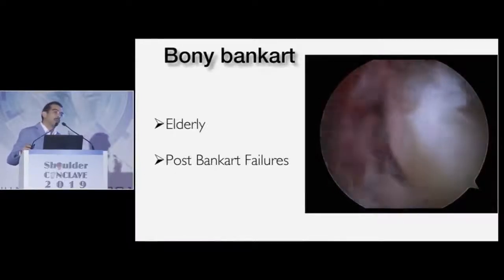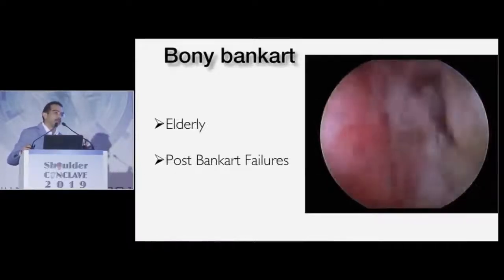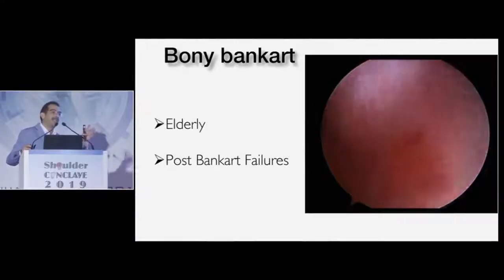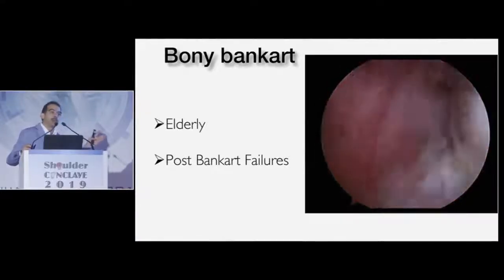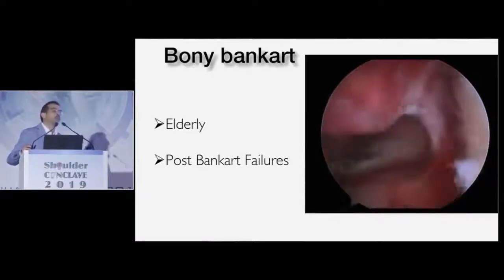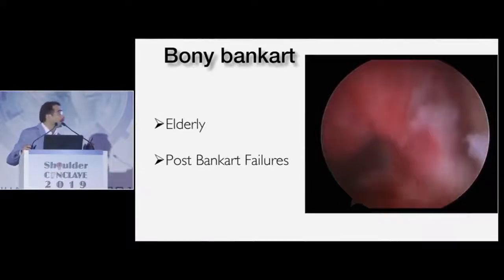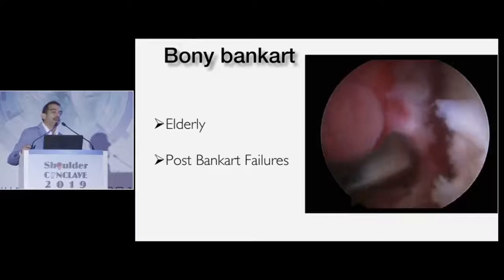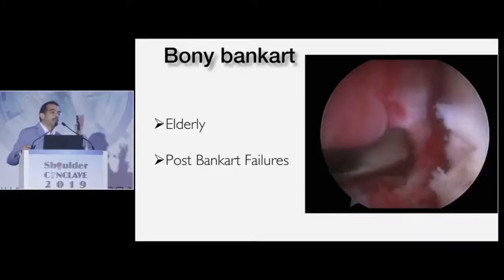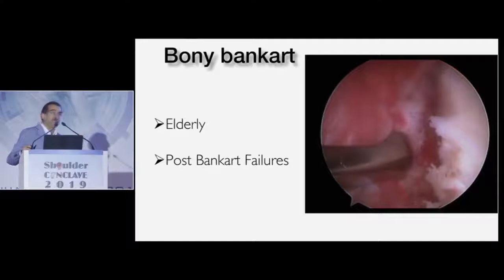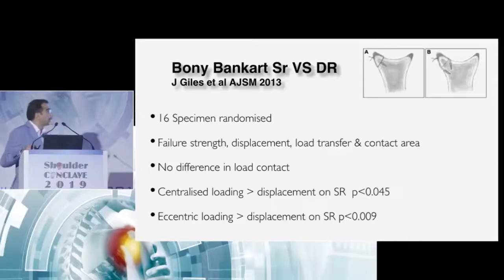We've observed that most of our bony Bankart patients — not all, but most — are usually elderly ladies with osteoporotic bones. The bones are much weaker than the ligament and the bones will give. The others are post-Bankart failures: if you have a post-Bankart failure, the anchor line appears like a fatigue line, and then invariably the glenoid will fracture through that line.